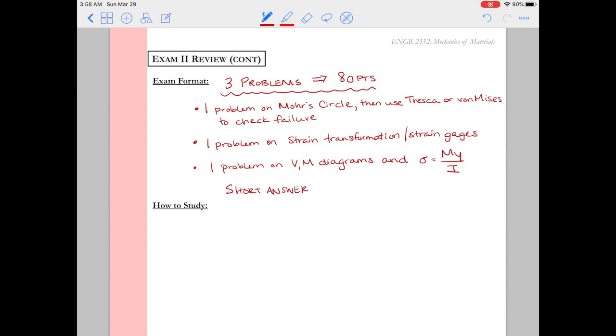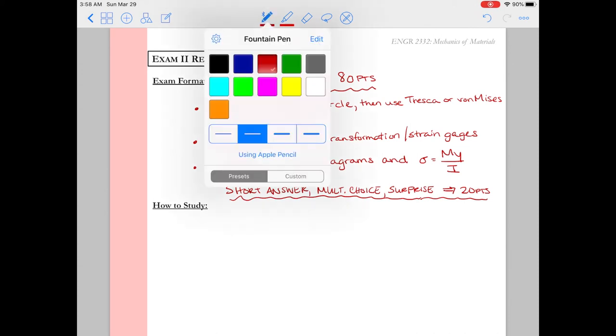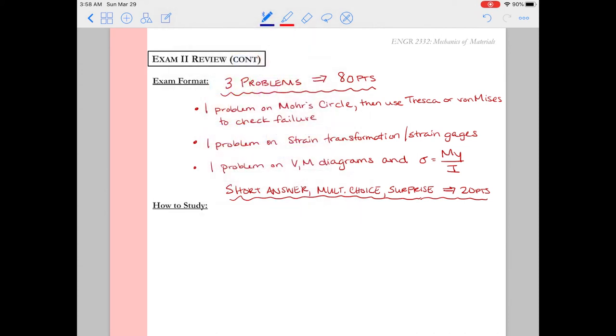Lastly we'll have some short answer questions or some sort of multiple choice, true false, I don't know, I'm going to surprise you. This will total 20 points, and the best way to prepare for those is just to read through the notes and watch some of the videos and just pay attention and see some of the key points. You can check some of our learning objectives from class as to what I might ask you to define or what I might be asking you to differentiate between.